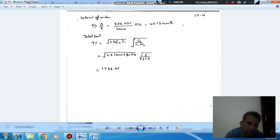And total cost is given by root 2 D C-not by C-1. So, that is the formula for total variable cost, total inventory cost. For models without shortage, if shortage is there, then we will add this term: root C-2 by C-1 plus C-2. So, now we have all the values, so we can find the total cost, and that is 1780.5.